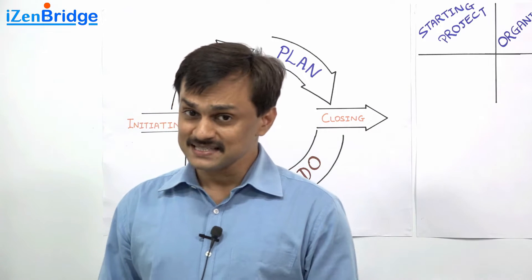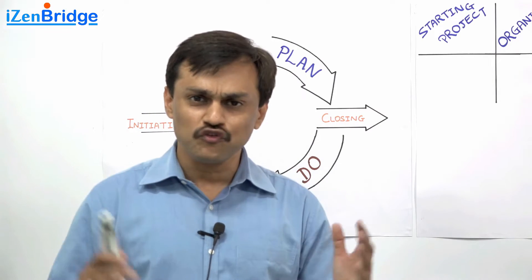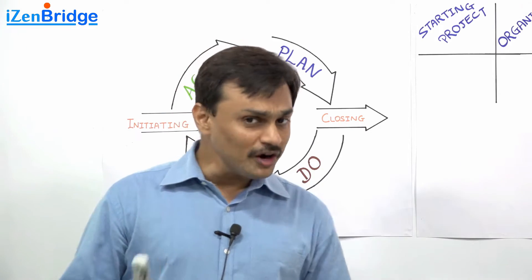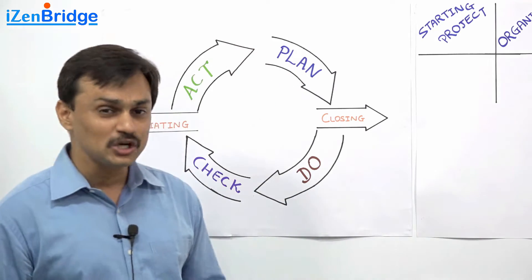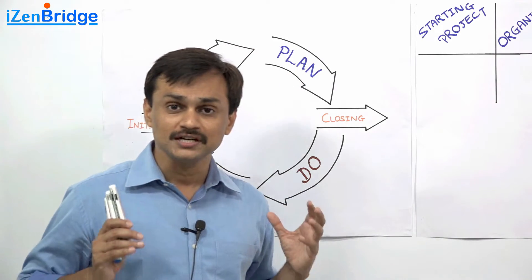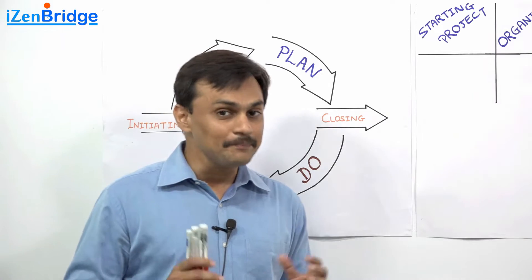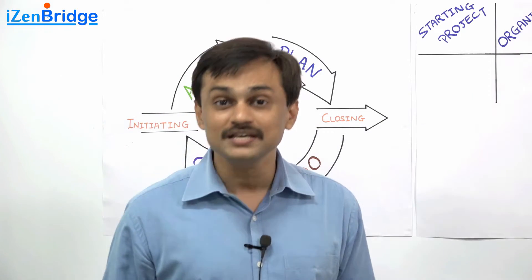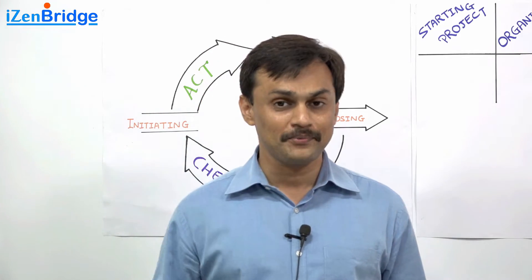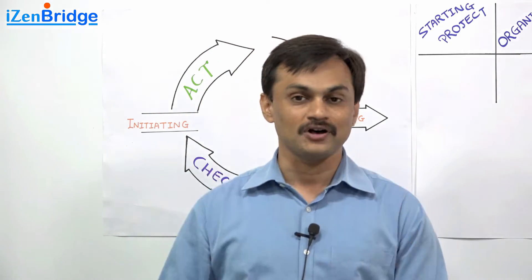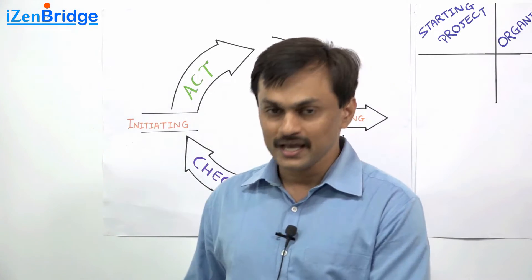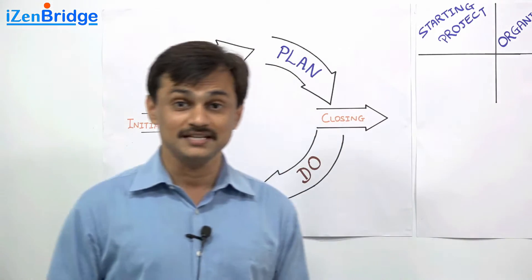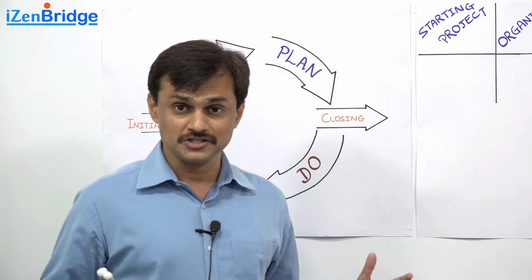The PMBOK Guide 6th edition has 49 processes, and in order to manage and look at those processes in some logical way, the PMBOK Guide also groups these 49 processes under 5 process groups. In this video, I am talking about these 5 process groups.